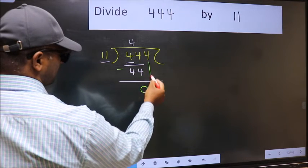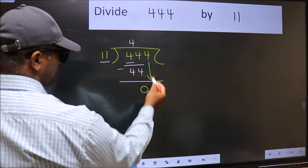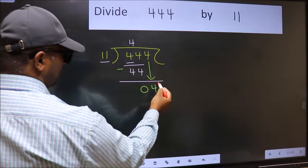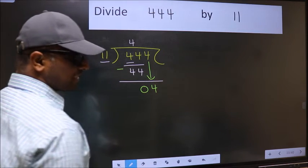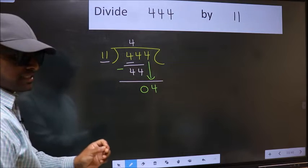After this, bring down the beside number, so 4 down. After this step, the mistake happens and the mistake is this.